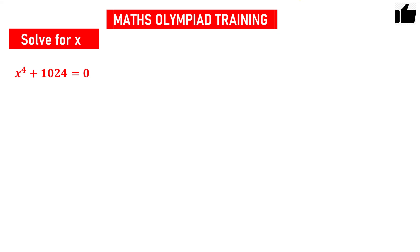Hello friends. In this problem you have been given a bi-quadratic equation, that is a 4th degree equation, and you have to solve for x. The equation is x raised to the power 4 plus 1024 equals 0. How will you solve this problem?